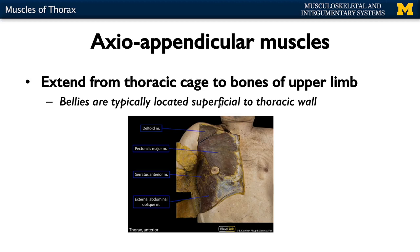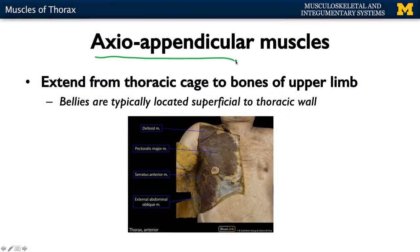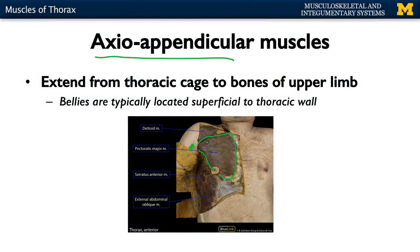These axial-appendicular muscles extend from the thoracic cage all the way to the humerus. Any muscle crossing the shoulder joint can have some role in shoulder joint movement. One of the main ones here is the pectoralis major — your pec — which has most of its belly in the thorax but attaches at the humerus, so it plays a role in shoulder movement, not rib movement.